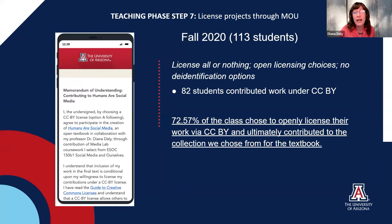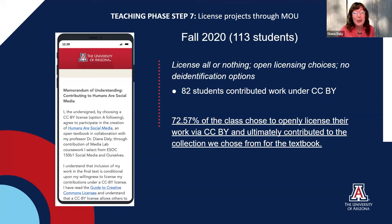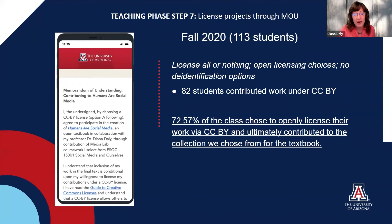At the end of the semester, students fill out a memorandum of understanding where they choose what to openly license for use in the textbook and other materials. I've revised our processes around the MOU every semester to better fit students' understandings and offer increased agency. In our first semester, fall 2020, I was eager for textbook content and emphasized the benefits of open licensing a lot. I believe this was ethical, but in hindsight I could have been more student-centered in how I presented that choice.